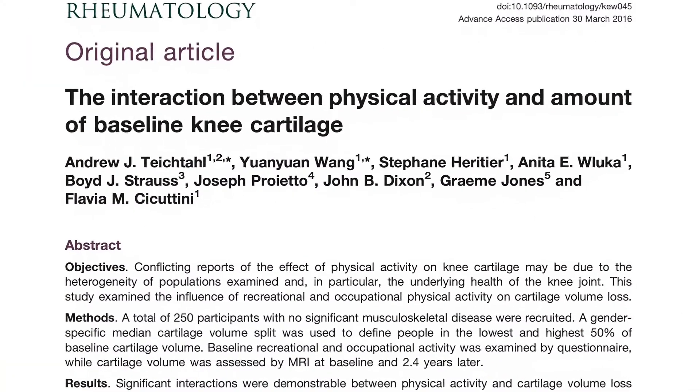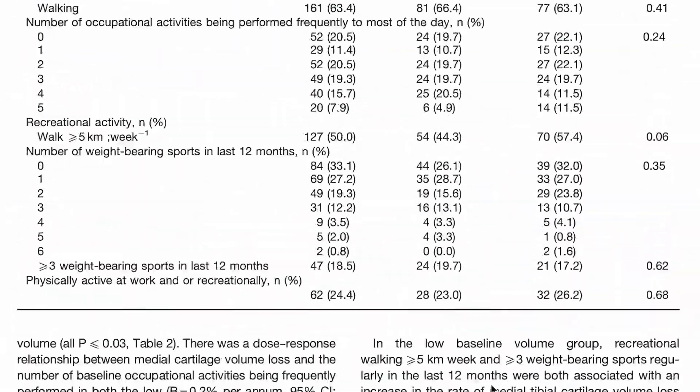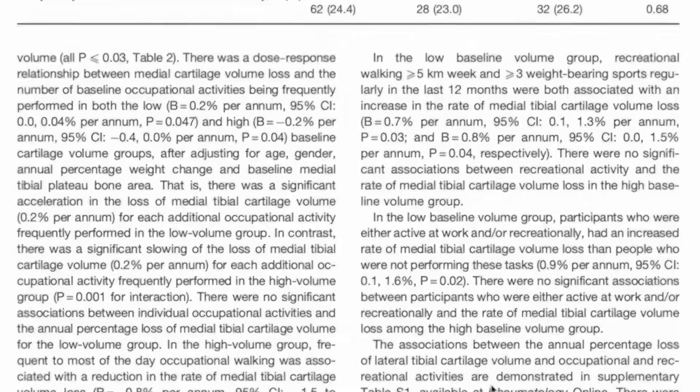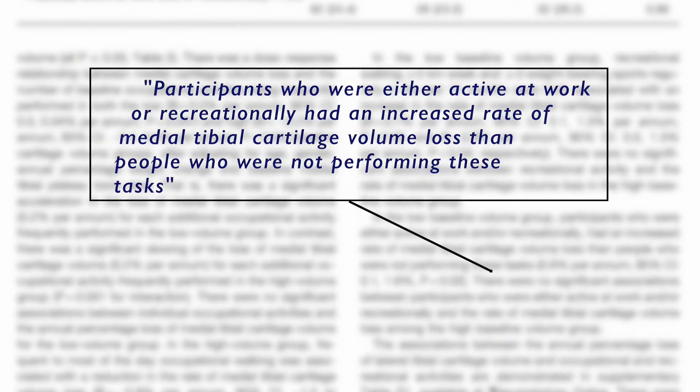Research has shown that children who are physically active accrue greater cartilage volume than those who are more sedentary, and forced immobility in adults — for example owing to spinal cord injury — leads to rapid loss of cartilage volume. In people with high baseline cartilage volume, exposure to heavy occupational and recreational activity slows the rate of cartilage loss, whereas the same exposure expedited cartilage loss among people with lower baseline cartilage volume.